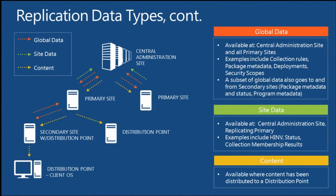The data flow diagram shows global data making its way to the CAS, to primaries, down to secondaries throughout the hierarchy — package programs, applications, collections metadata all travel this way (shown as the orange line). Site data is sent up to the CAS but not across to other primaries or secondaries. Content is available wherever you deploy it.